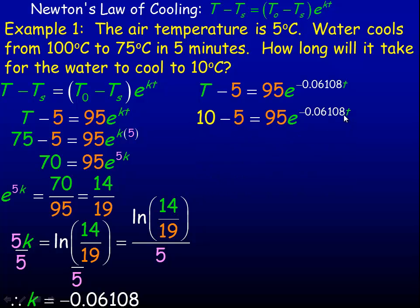The question asks how long it will take for the water to cool to 10 degrees. We'll put 10 in place of temperature and solve for time. So 10 minus 5 is 5, which equals 95e to the negative 0.06108T. To solve for T, we divide by 95, getting e to the negative 0.06108T equals 5/95, or 1/19.